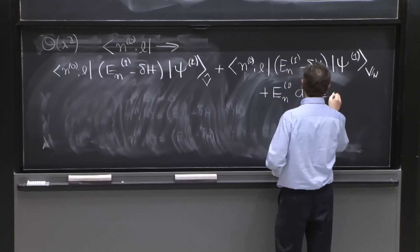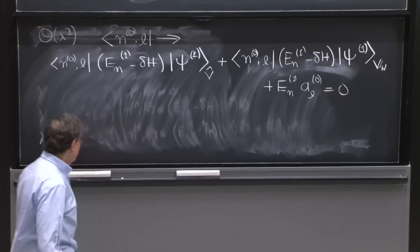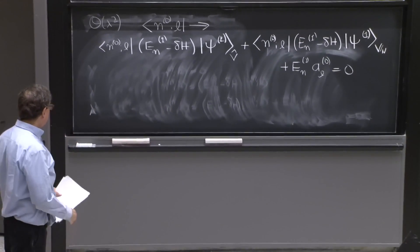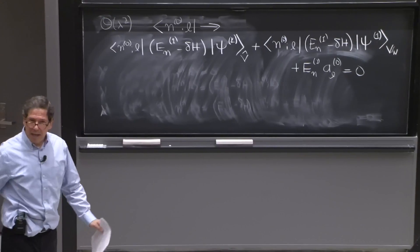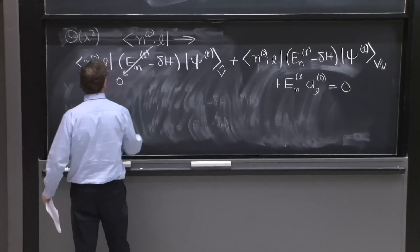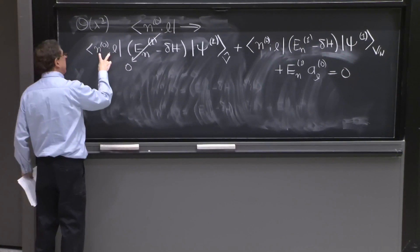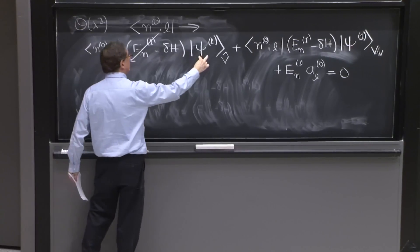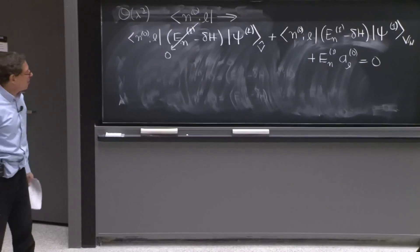That doesn't look that terrible. I don't know if you agree, but it really doesn't, especially because a few things are gone. This term is zero. Why? Because the state in the degenerate subspace is orthogonal to v hat. Gone, that term.